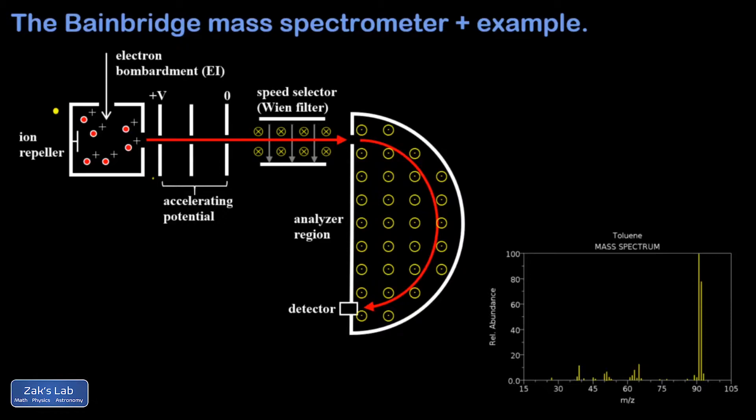Note that this ionization process almost always produces a single ionization, so the resulting charge on the ionized particle is plus QE, the elementary charge. And if you recall, that's 1.60 times 10 to the negative 19 coulombs. Occasionally we get double ionizations, resulting in a charge of twice the elementary charge.